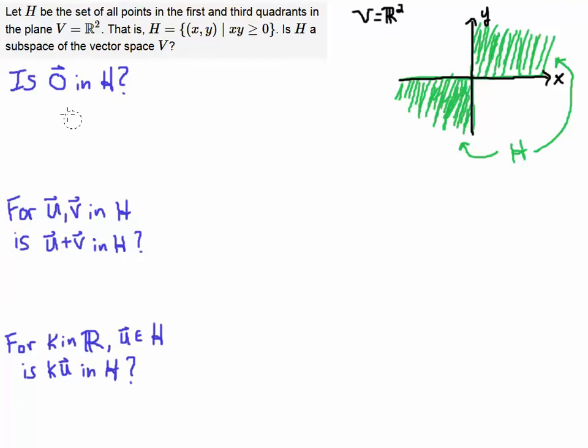We want to see a zero in the subset. We want to know that for any U and V in the subset H, that means any vector in this quadrant, or any vector in this quadrant, is the sum of the vectors, U plus V, also in these two quadrants.